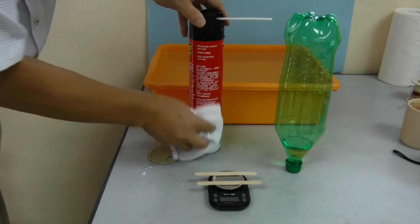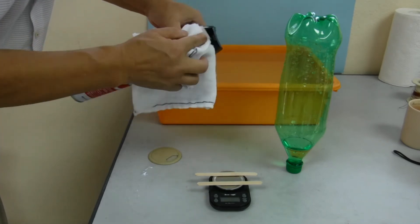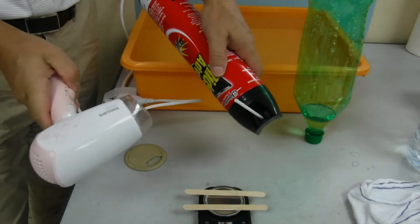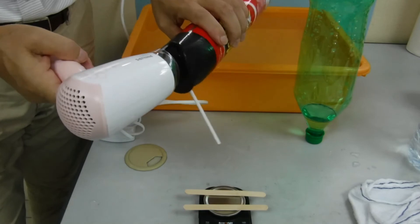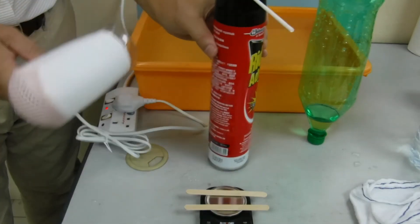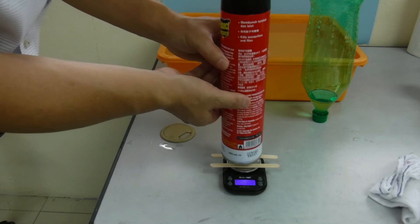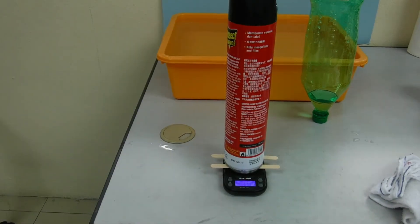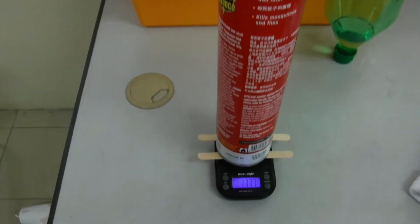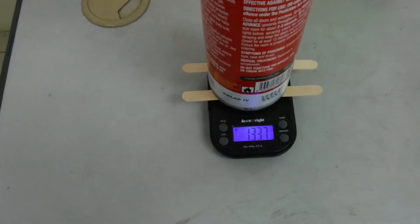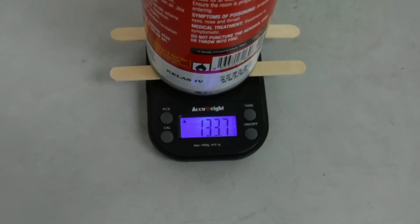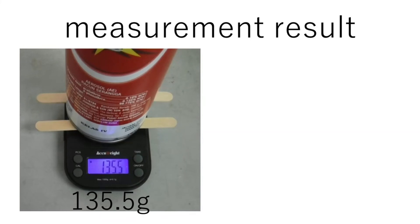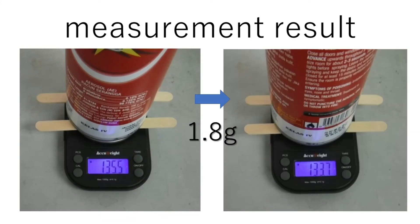The water on the can must be removed with a cloth or hair blower completely before the second measurement. The mass of 1.5L air is 1.8g.